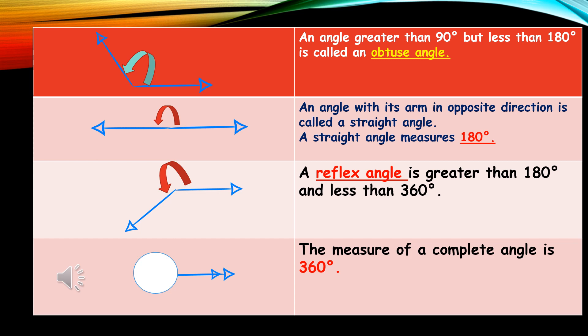A reflex angle is greater than 180 degrees and less than 360 degrees. So any angle which measures between 180 and 360 degrees will be called a reflex angle. At the last we have complete angle. The measure of a complete angle is 360 degrees — when the initial arm completes one full rotation and comes back to its initial position, we call it a complete angle.